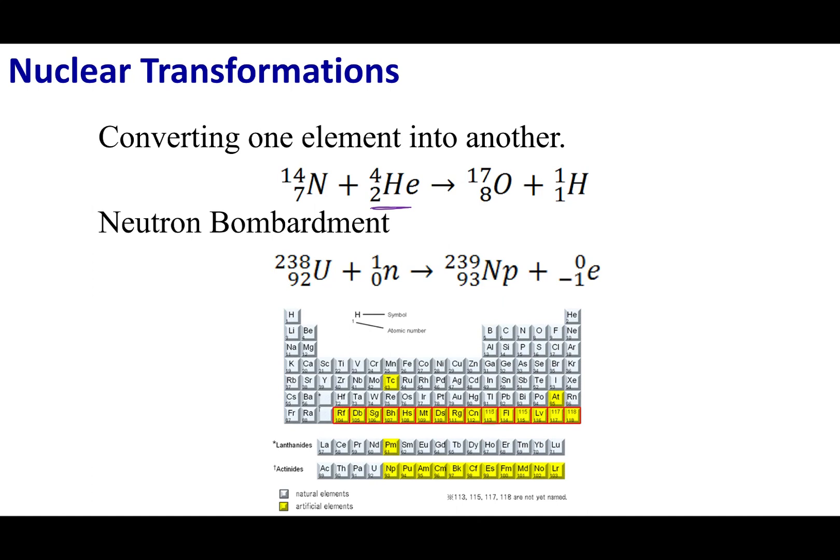In the 1920s is when we actually first transformed one element into another element. What experimenters did is they took nitrogen-14, bombarded it with the alpha particle, and what they produced was oxygen-17 and one thing of hydrogen. This was the first time people, on purpose, changed one element into another element. Also note, what they were doing here was they were taking one known element and changing it into another known element.